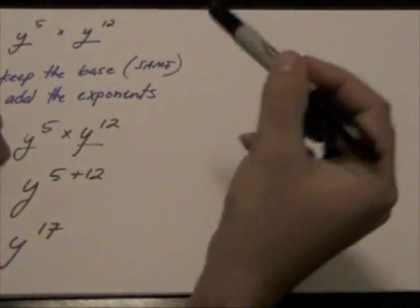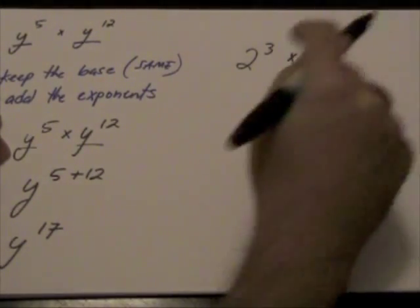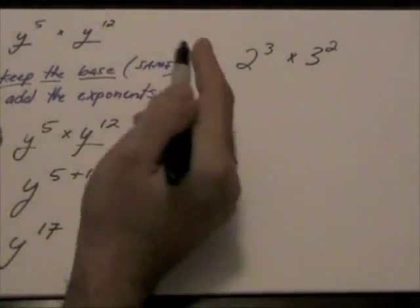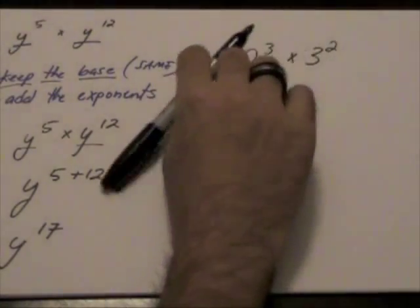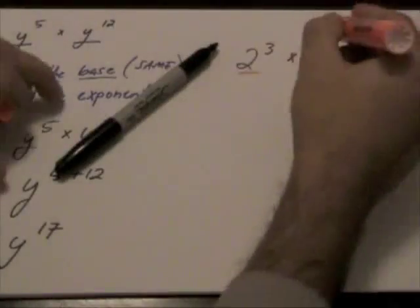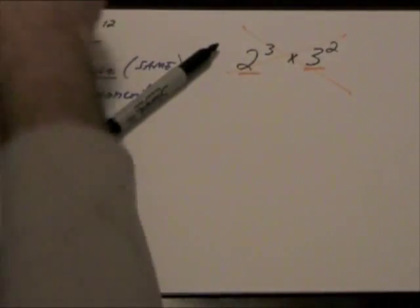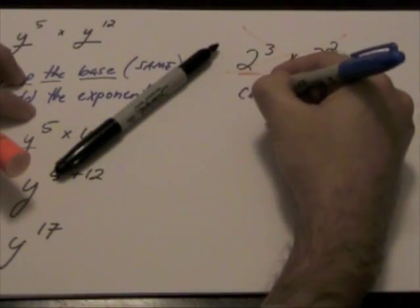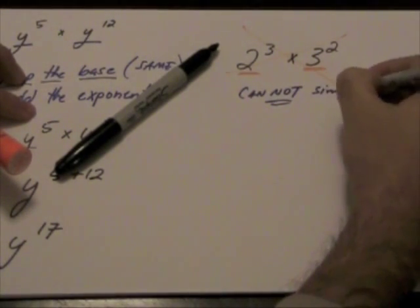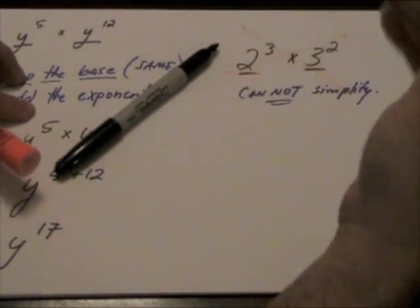Here's another example: 2 to the power of 3 times 3 to the power of 2. We said we're going to keep the base. Can we keep the base? Well, in this example one base is 2, the other base is 3. In other words, we cannot do this. We can find an answer, but we cannot simplify the expression. The bases would have to be the same.